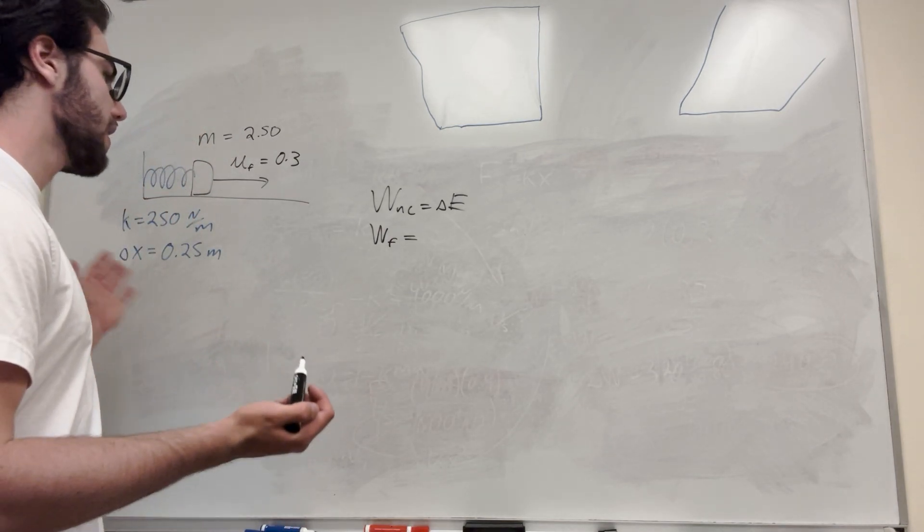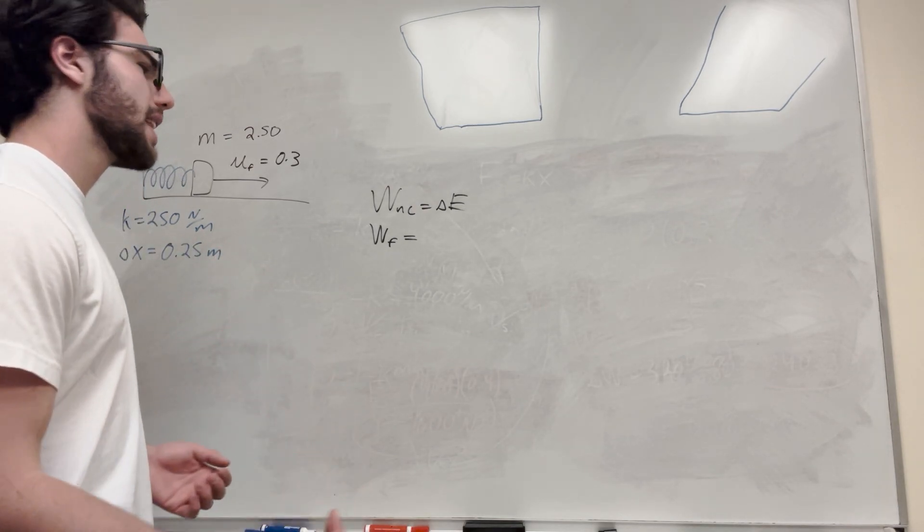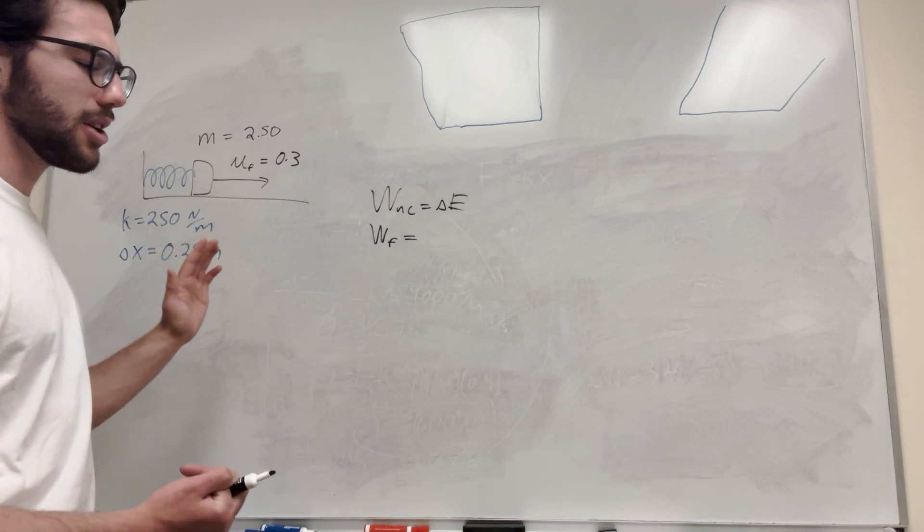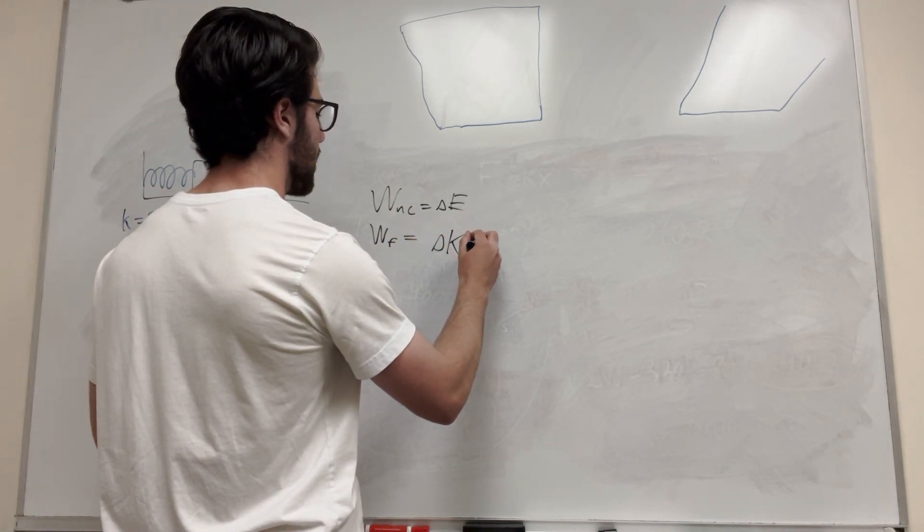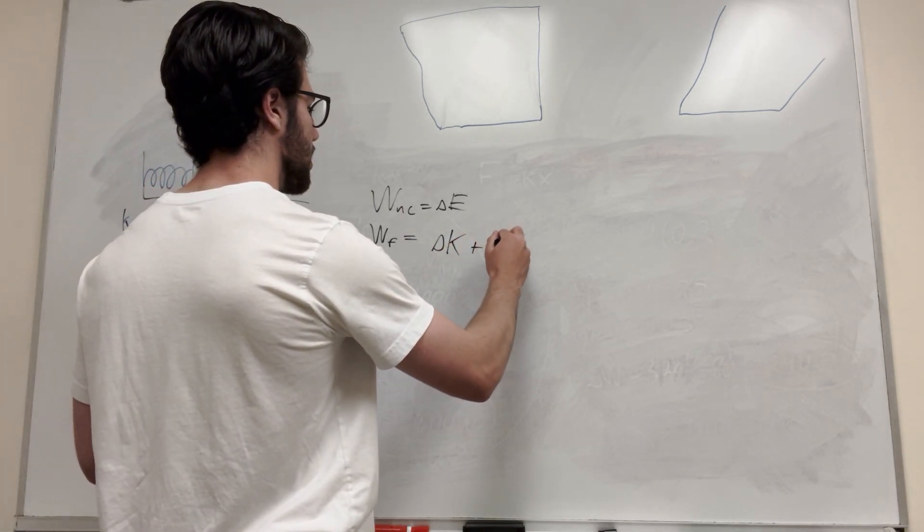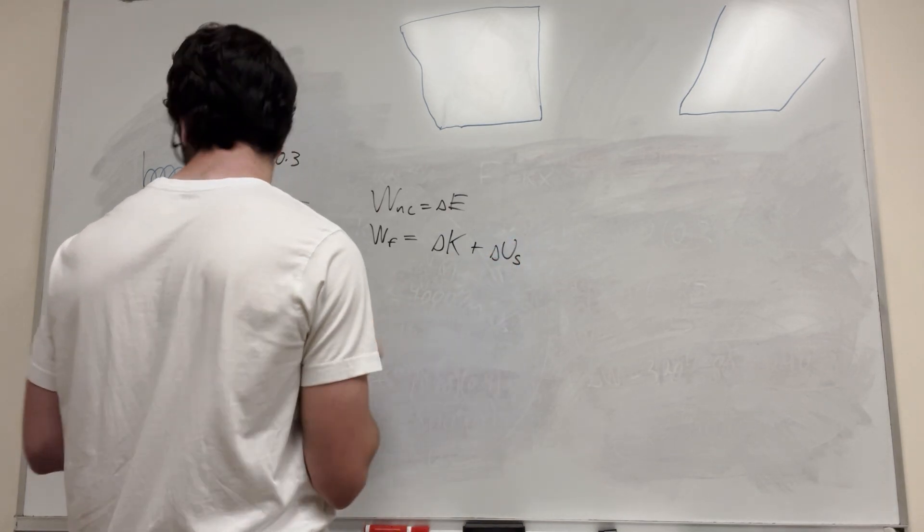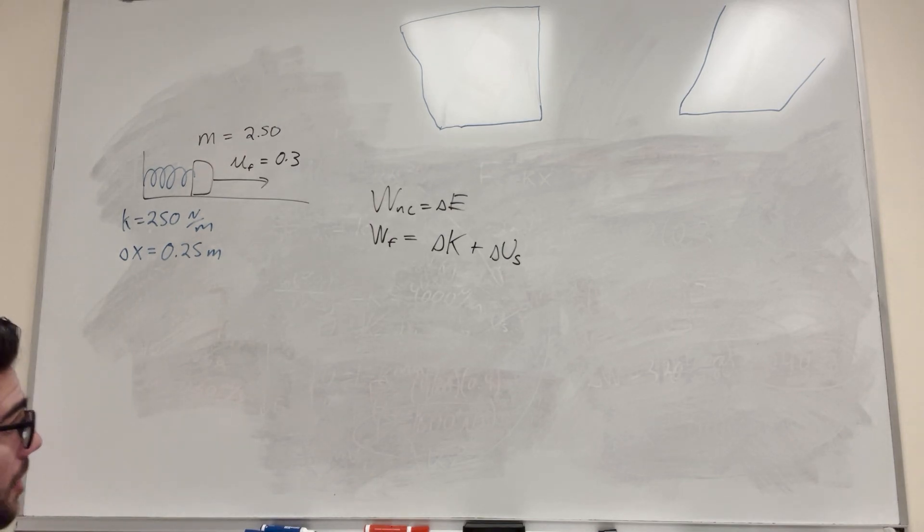So what do we have here? Well, it's on a flat surface, so there's really no change in gravitational energy. Don't have to worry about that one. It's gonna be in motion, so let's write out delta K. That might be something we need. And then let's think about, it definitely has a spring, so it's gonna have a change in spring energy. So let's do that, US. So those are what we're gonna use.